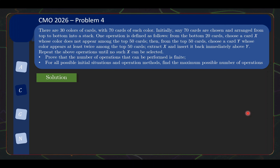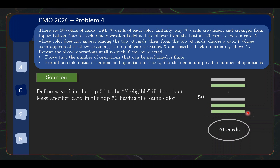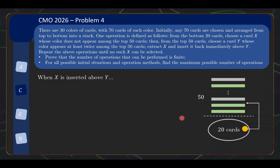Before finding our monovariant, we define an important term. We say that a card in the top 50 is Y-eligible if there is at least one other card in the top 50 having the same color — meaning that card is allowed to be selected as Y. This definition applies to a particular state and must be refreshed after each operation. In diagrams, Y-eligible cards are shown in green and Y-ineligible cards in grey — the colors green and grey just distinguish eligibility, not actual card color.